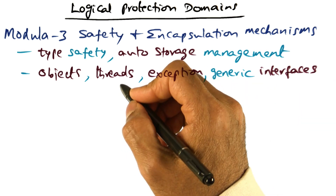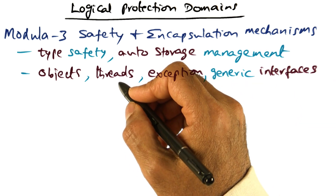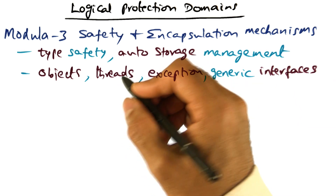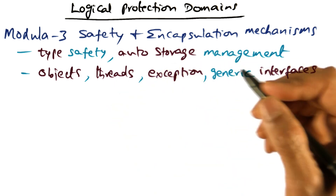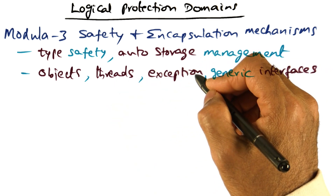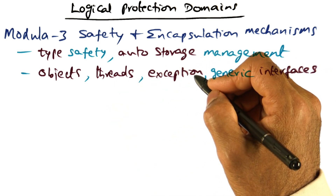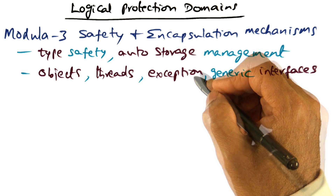Modular 3 also supports the notion of threads that execute in the context of the object, and it allows raising exceptions — for example, when there is a memory access violation.